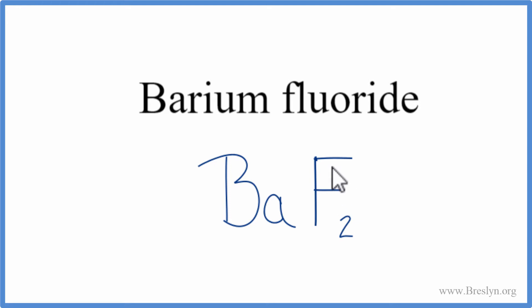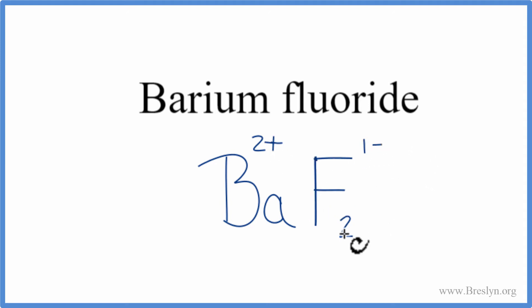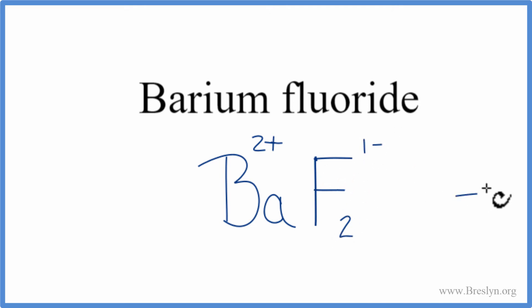Let's check our work to make sure we have the right answer. We have barium, which is 2-plus, and fluorine, which is 1-minus. We have two fluorine atoms, and each one is minus 1, so 2 times minus 1.